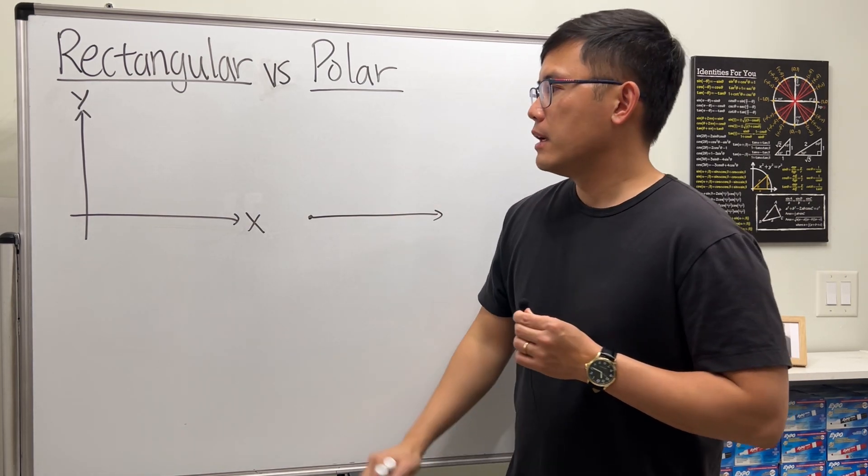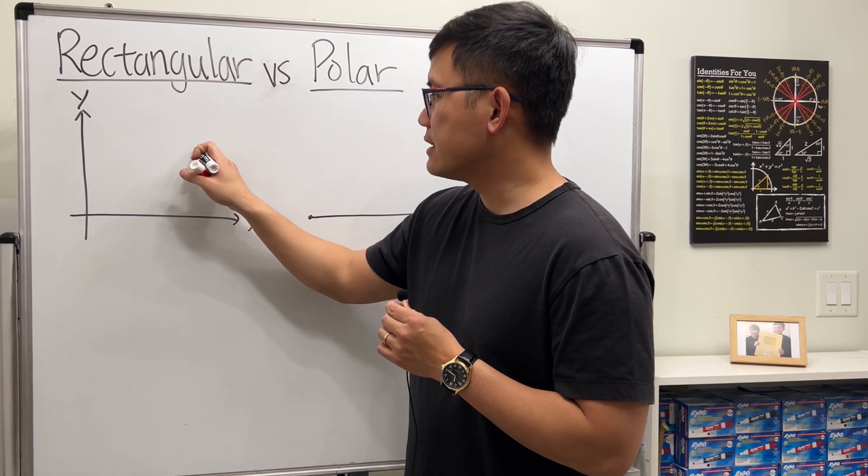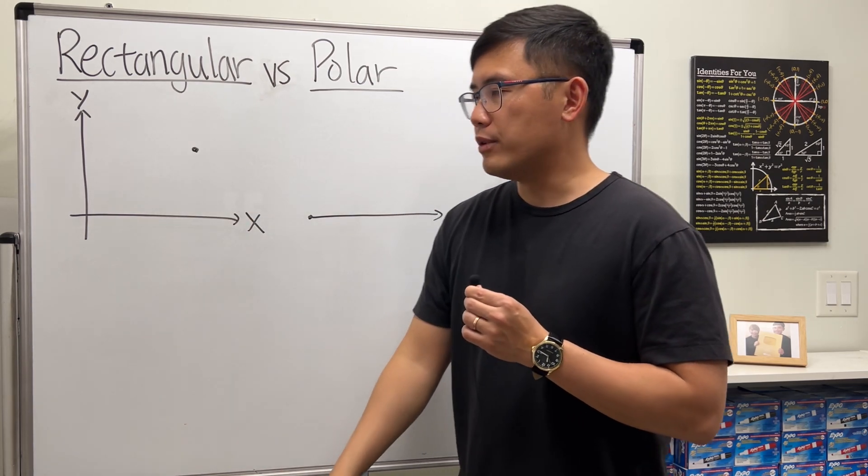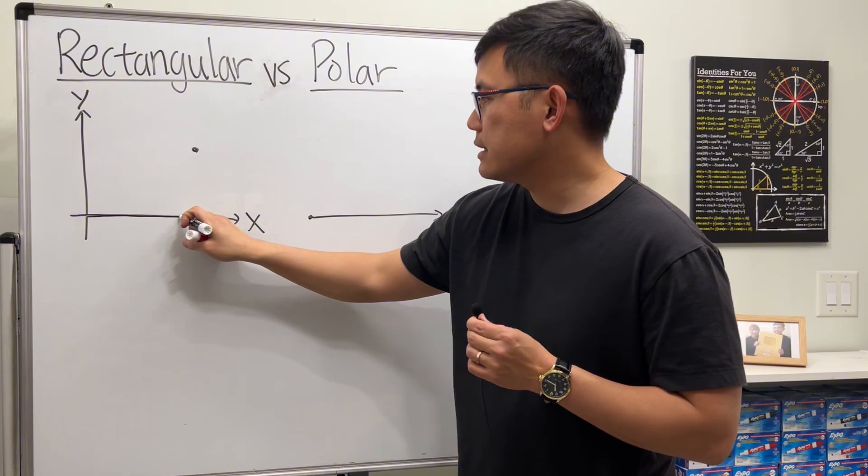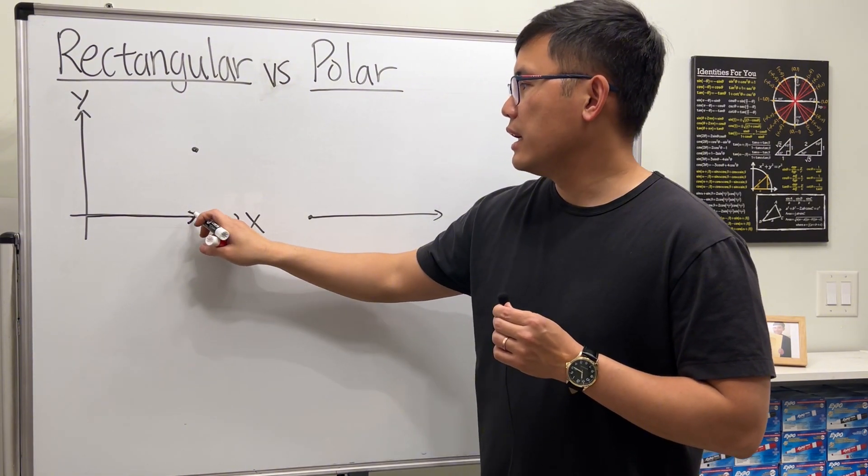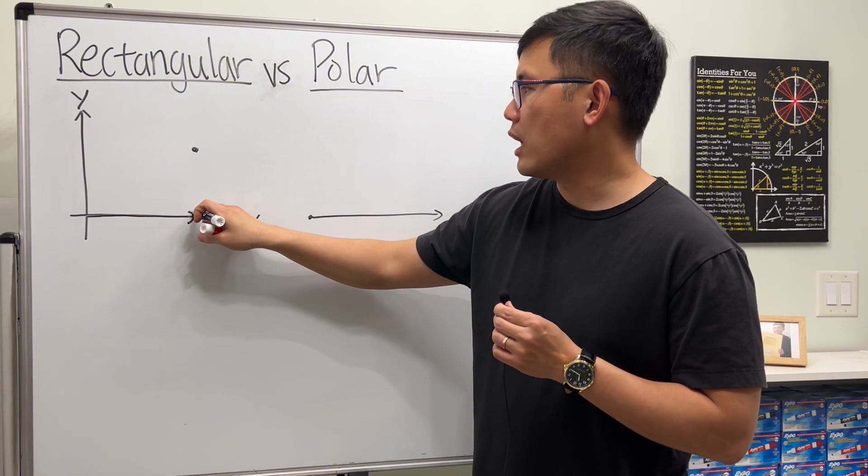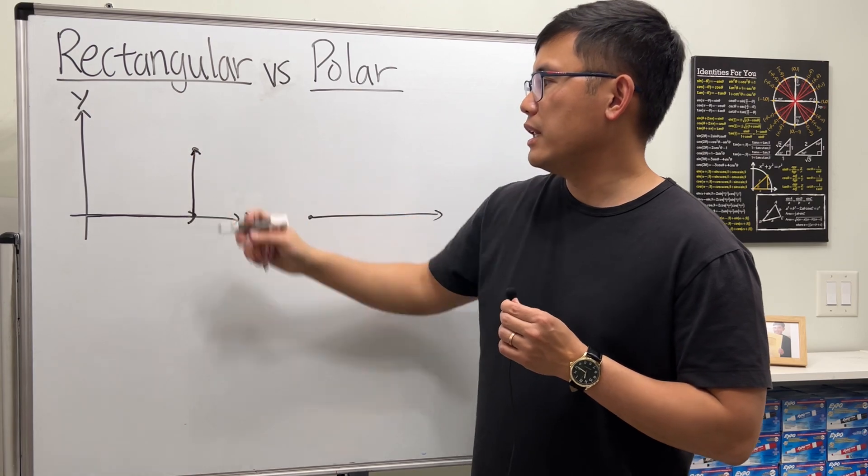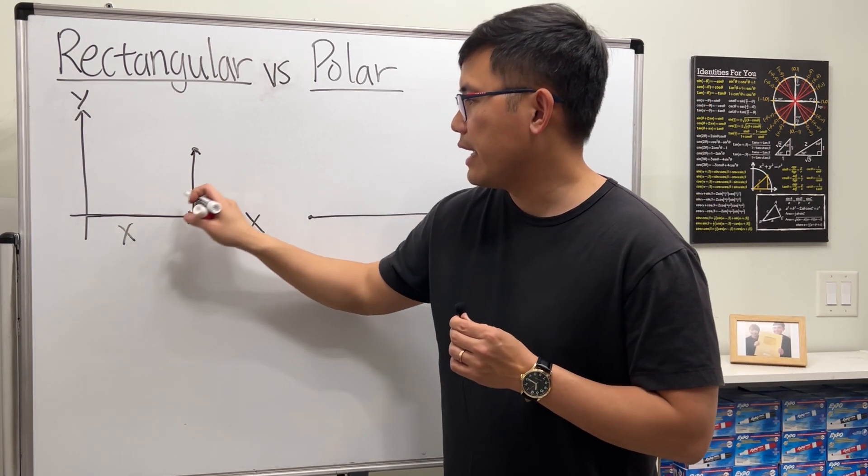So if we have a point somewhere here, we will have to know how many times we move to the right, and that's the x value. And then we have to know how many times we have to go up, and that's the y value. So x and y give us (x, y).